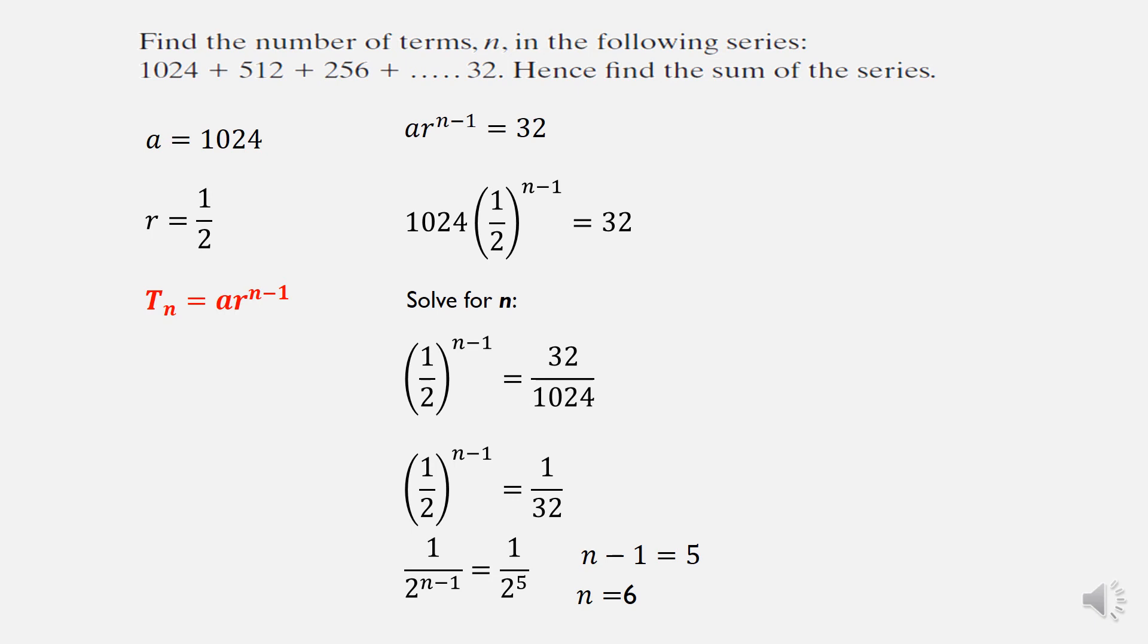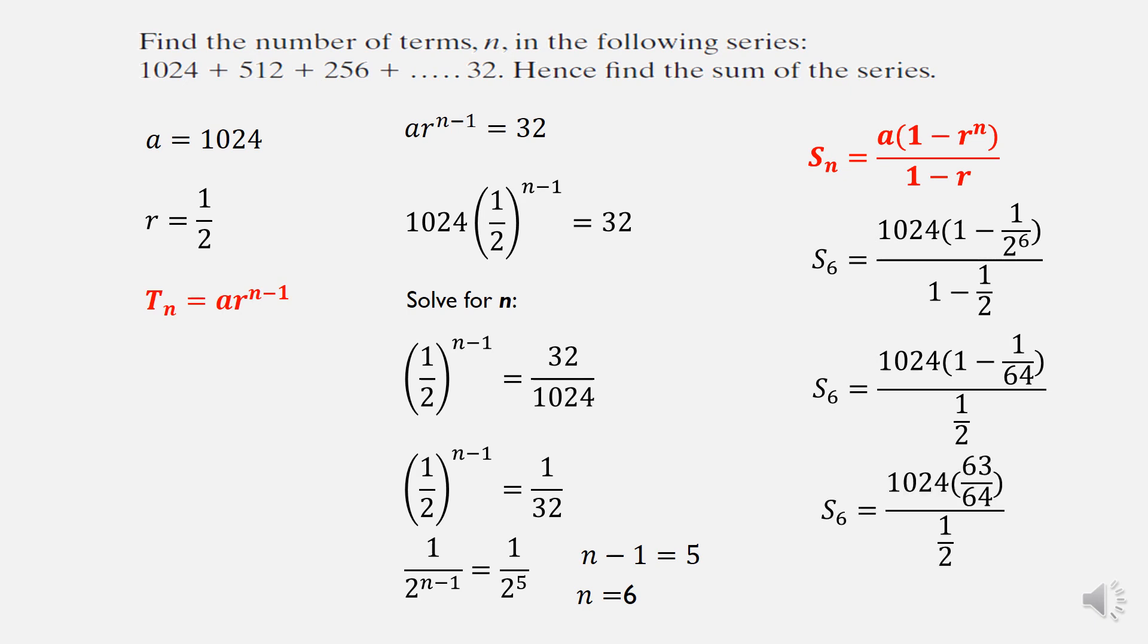Now we were asked to find the sum of the series. So what are we after? There's our sum formula. We're after s6. And we substitute in for our a, and for our r, and the power we're using is 6. So for 2 to the power of 6, we get 64. Underneath, 1 minus a half is just half. 1 take 1 over 64 is 63 over 64, work out the top line. Dividing by a half is the same as multiplying by 2. I got 1008 for the top line, multiply by 2, and I get 2016.